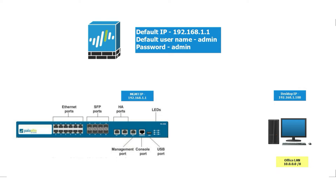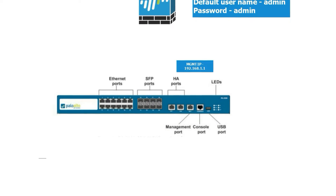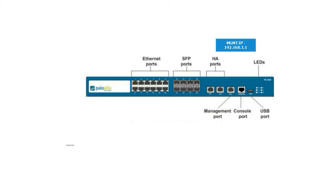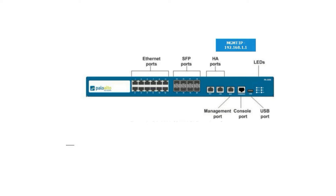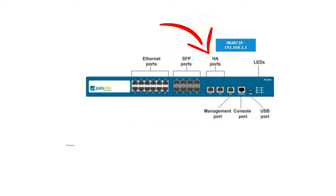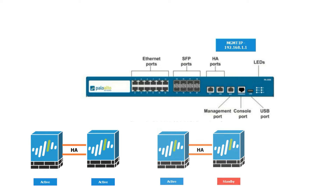First, let's understand the interfaces on this firewall. When you purchase a firewall, the interfaces depend on the model. For example, the 200 series has fewer interfaces compared to higher models. On this firewall 3020, we can see ethernet ports for RJ45 connectivity, SFP ports for fiber connectivity, and HA ports used for high availability — for example, configuring two firewalls as active-active or active-standby.